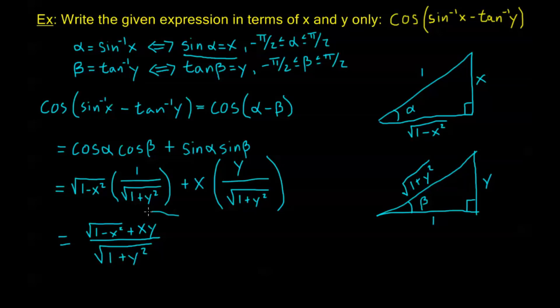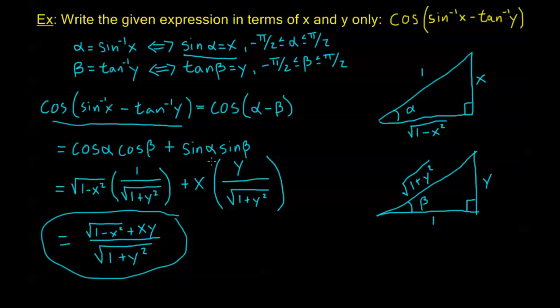And we're done. We've written cosine of sine inverse x minus tangent inverse y as an algebraic expression in x and y only. This is very similar to what we did before, except now we make two different substitutions, set up two triangles, and then apply the addition or subtraction formula, using those triangles to plug in values for each trig function.